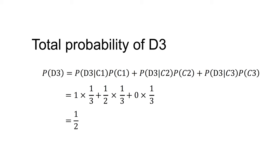Returning to our equations, the total probability of the host opening door three equals P(D3|C1)·P(C1) + P(D3|C2)·P(C2) + P(D3|C3)·P(C3), which equals 1/2 × 1/3 + 1 × 1/3 + 0 × 1/3 = 1/2.